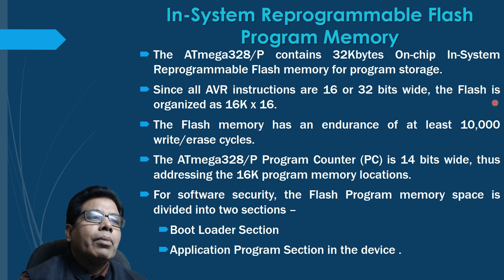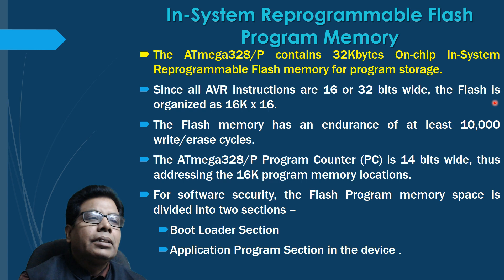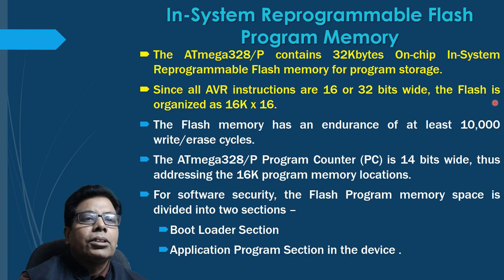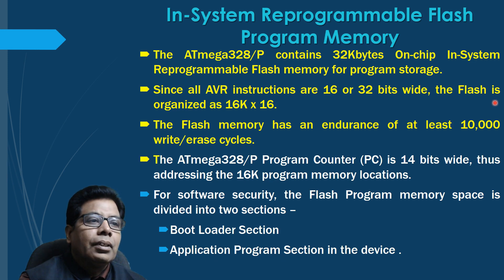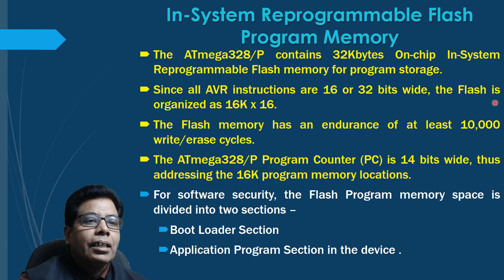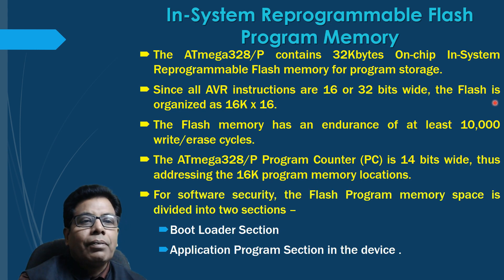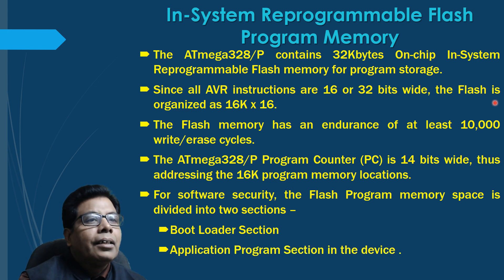The first memory is the in-system reprogrammable flash program memory. The ATmega328P contains 32 kilobytes of on-chip in-system reprogrammable flash memory for program storage. Since all AVR instructions are 16 or 32 bits wide, the flash is organized as 16K by 16. The flash memory has an endurance of at least 10,000 write/erase cycles. The ATmega328P program counter is 14 bits wide, thus addressing 16K program memory locations.